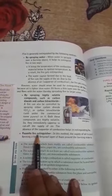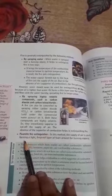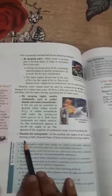Next is the foam fire extinguisher. In this method, the supply of air is cut off by forming a light fireproof layer of foam around the burning material. By forming a fireproof layer, the fire can be extinguished.